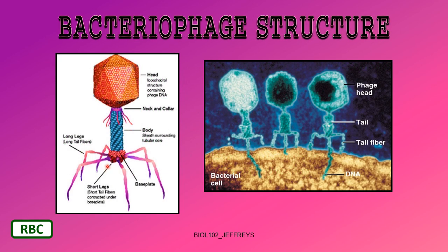Here is your typical bacteriophage structure — you've seen this already. The icosahedral head and the cylindrical tail, sometimes called the body. Some have little tail fibers or legs. This is an electron micrograph showing a bacterial cell. You can see the icosahedral heads and the tail or body. There are the tail fibers, and you can see the genome being injected into the cell. Pretty cool.